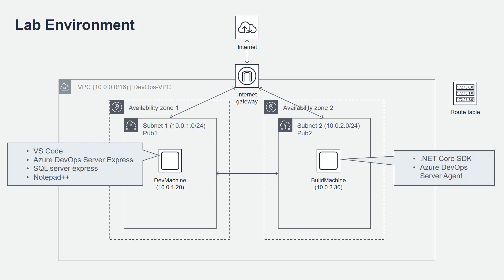Then we are going to start another machine called the build machine with the IP address 10.0.2.30. This build machine has .NET Core SDK already installed and also has an Azure DevOps Server agent set up, so that the Azure DevOps Server in the dev machine already comes with a build agent configured. So let's go and start these two EC2 instances in these subnets.